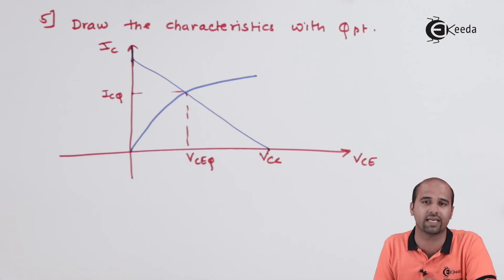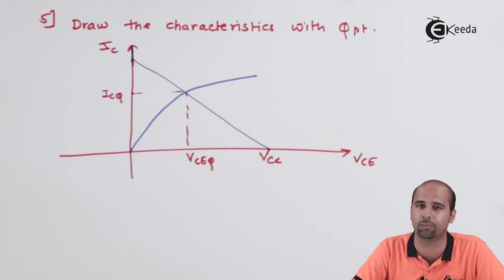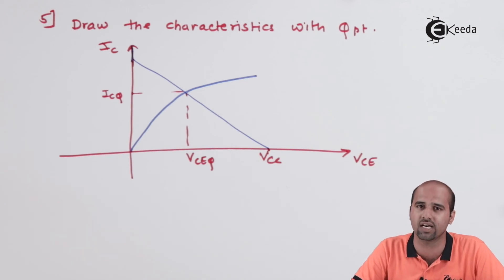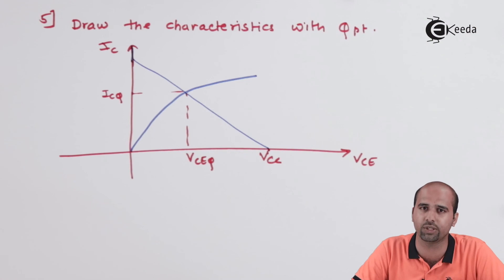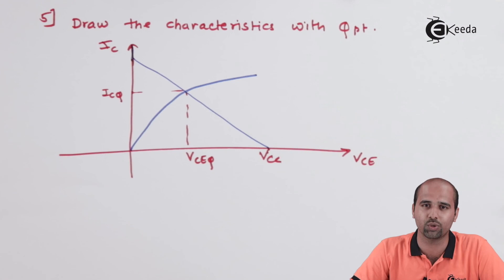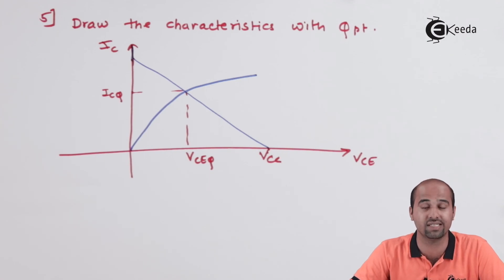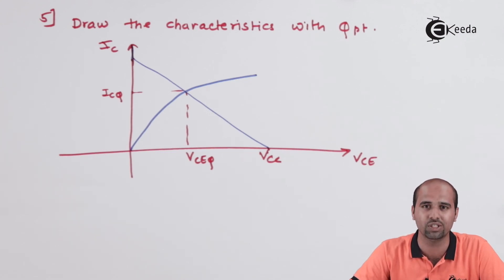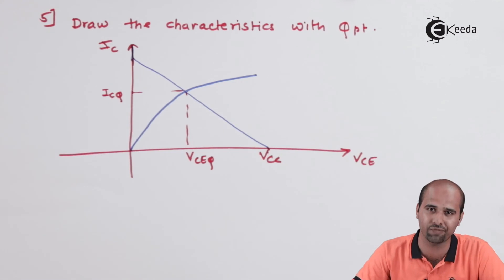If the output goes beyond VCEQ, it will get clipped off and we cannot use the circuit as an amplifier. These are the steps for DC analysis — to establish the Q point, the reference voltage and reference current, for the further process of amplification in AC analysis. In the next video, we will learn AC analysis, which is the next step of the amplification operation, both mathematically and conceptually.